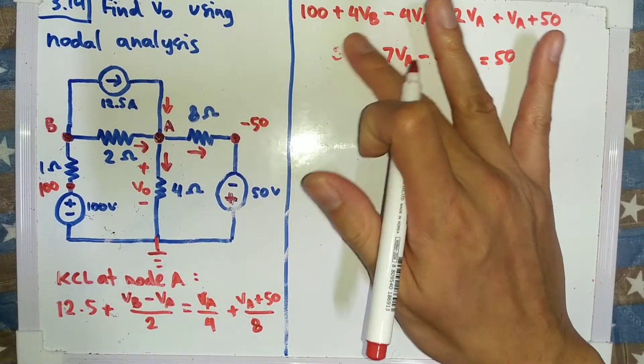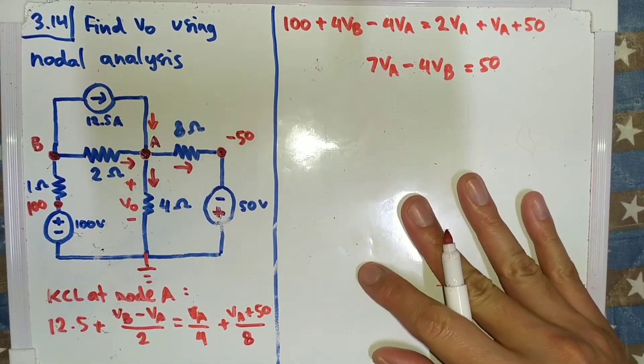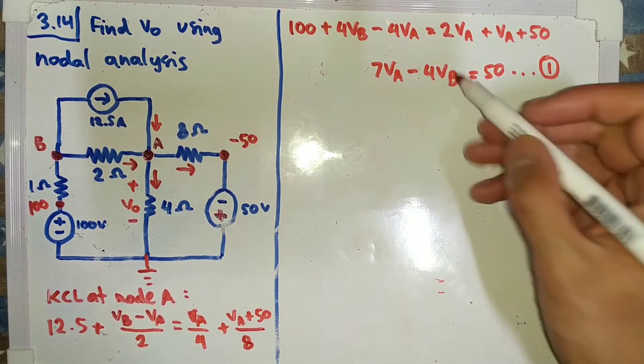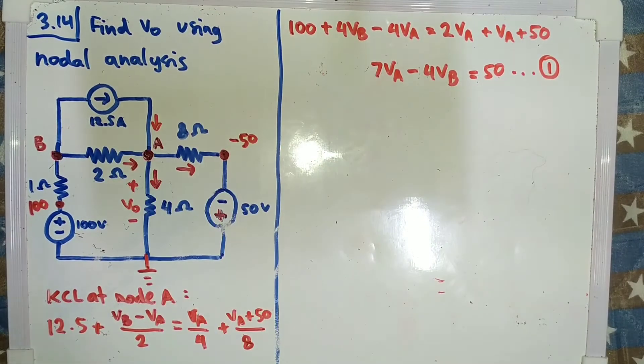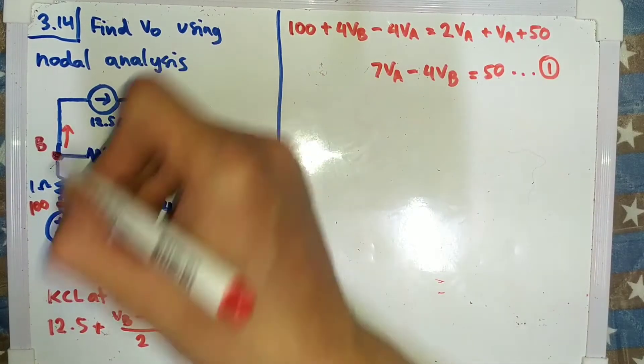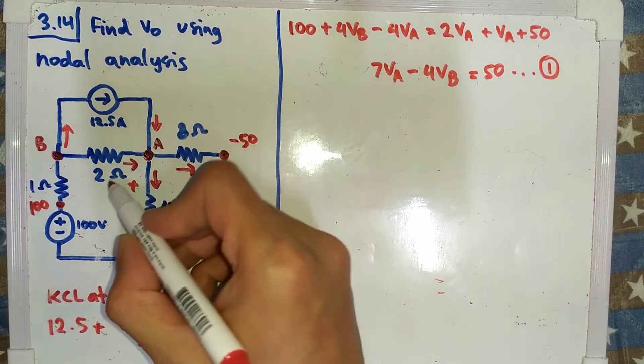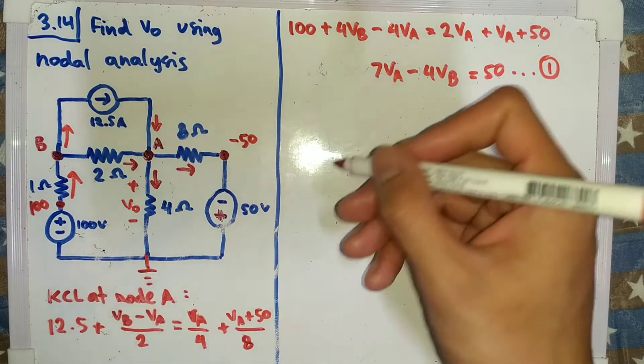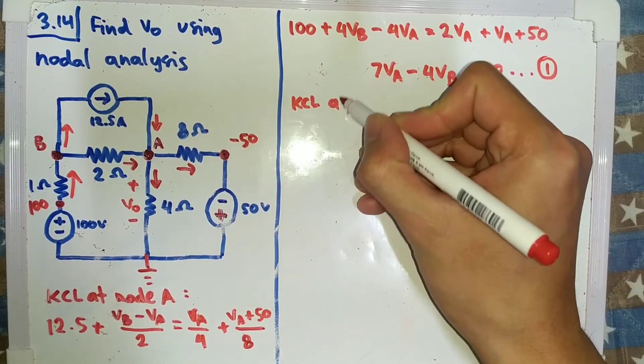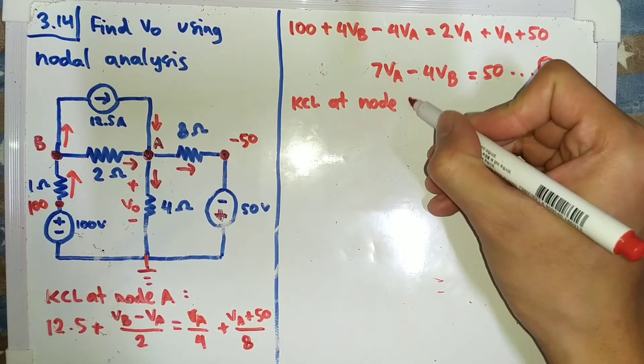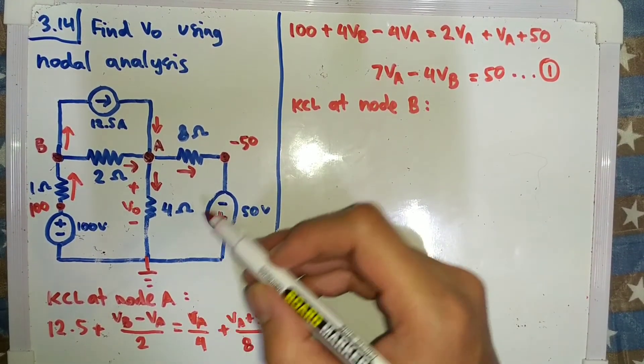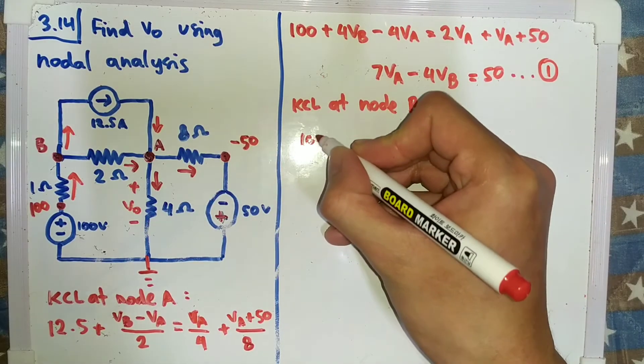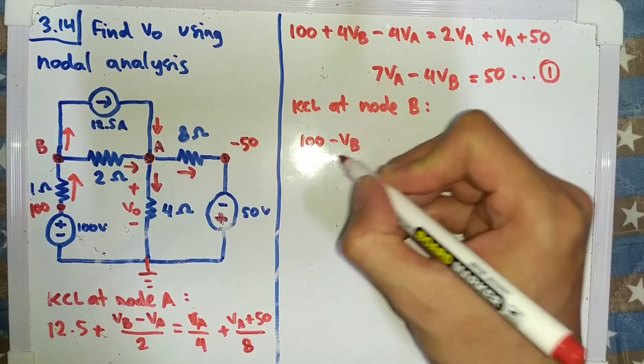Plus 50, we move to the left side so it becomes 50. It is easier when we write this one over there, so let us save this as first equation. And then we need this VB, so we will take a look at this node. This one is current source, so the arrows will go there. And because this one also goes out, I will assume this will go in. Now we take a look at node B.